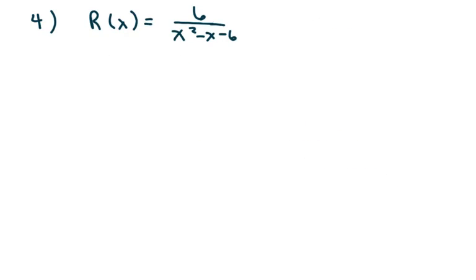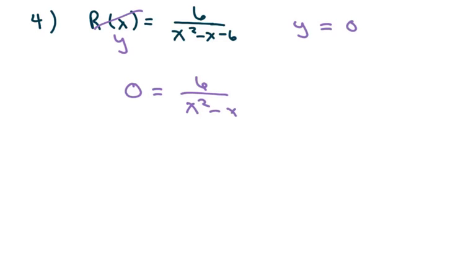The next one is the same thing. The horizontal asymptote is Y equals 0. Set the equation equal to that Y and cross multiply — that's just going to give 0. So you get 0 equals 6, which doesn't make sense. No solution, therefore it does not intersect.